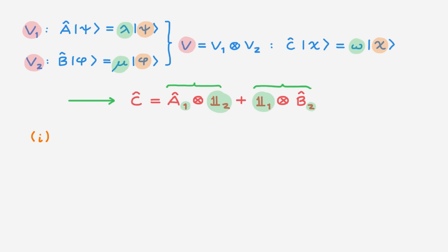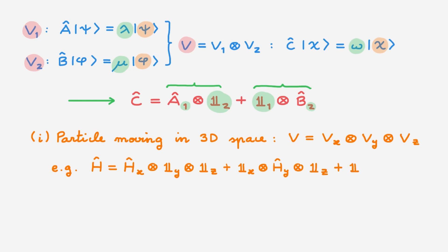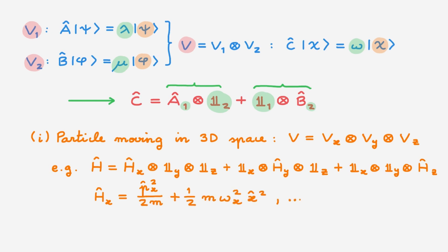A general situation where this happens is when we have a particle moving in the usual three-dimensional space. In this case the full three dimensions are described by a tensor product state space V made of the tensor product of the state spaces associated with each individual spatial dimension. As a concrete example, the three-dimensional quantum harmonic oscillator is described by a Hamiltonian that is the sum of a Hamiltonian along x, a Hamiltonian along y, and a Hamiltonian along z, where each takes the usual expression for the one-dimensional quantum harmonic oscillator. So the Hamiltonian H of a particle moving in a three-dimensional quantum harmonic oscillator takes the same form as the operator C we'll investigate today, meaning everything we learn will be immediately applicable to this system.